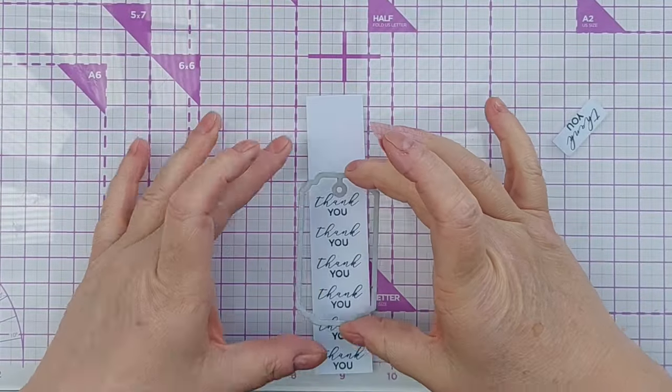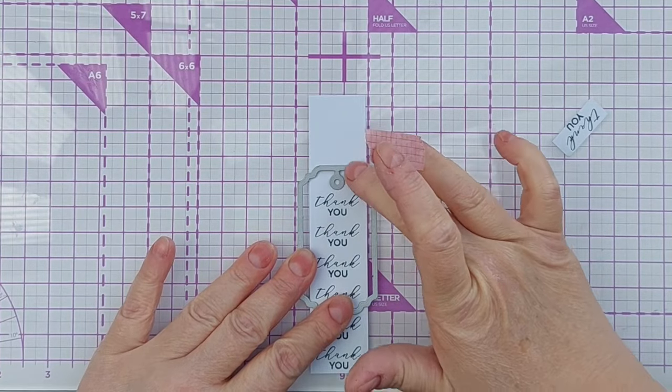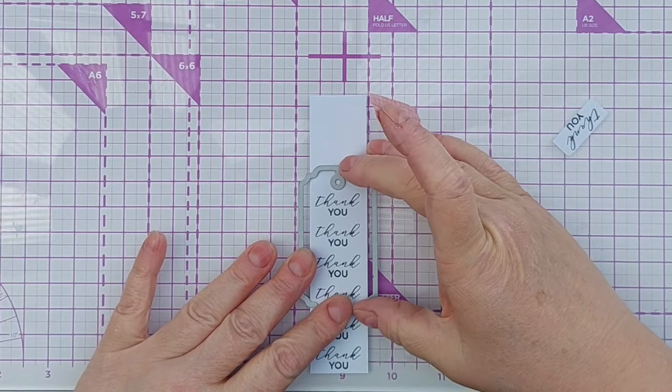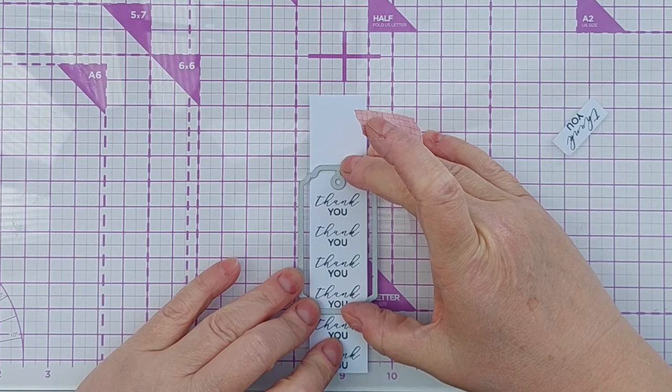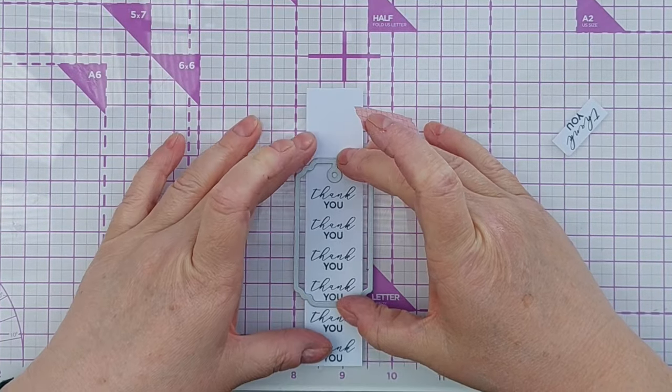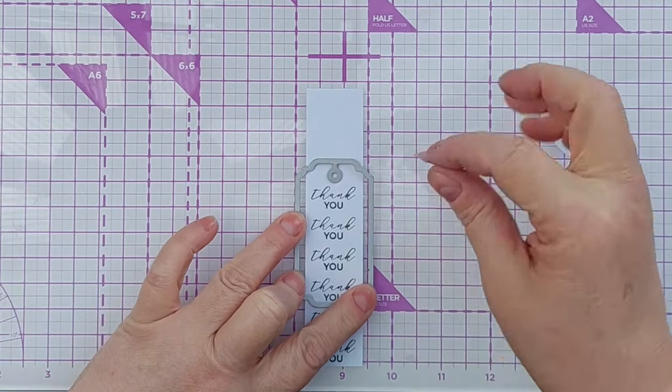I've got this tag die and I've chosen it because it's got a nice top to it, this undulating top here. But it is wider than the strip that I want to cut, so I want to get that centralized and symmetrical. I think that's it.